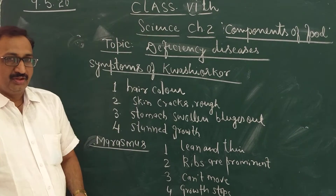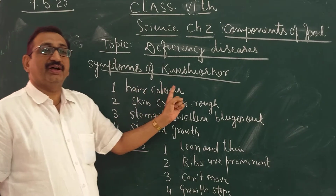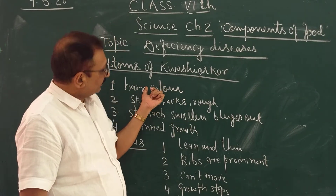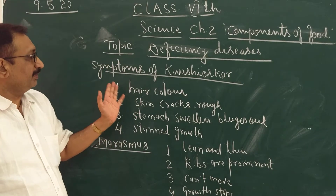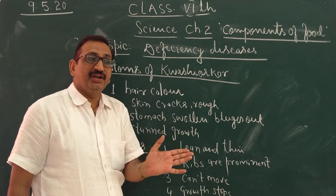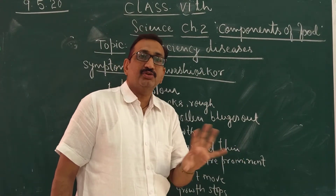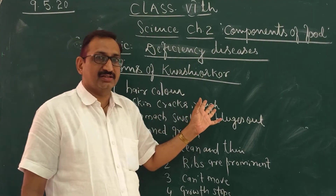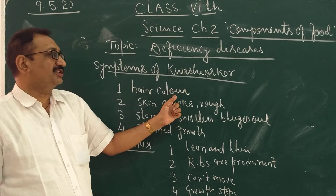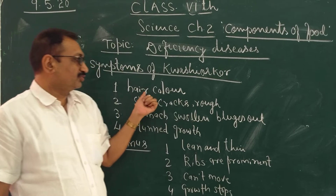So students, the very first symptom is the change of colour of the hair. Normally children's hair is black, but if any child is suffering from Kwashiorkor, their hair colour will change and convert into red colour. So if a child in the age group of 1 to 5 years has red-coloured hair, this is a symptom of Kwashiorkor — this colour has not come from any dye, it is natural.